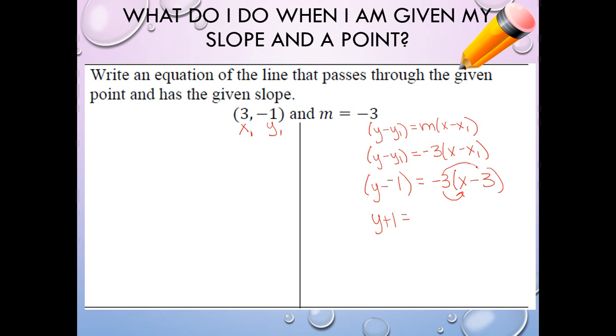Over here, we're going to distribute. I have negative 3 times x, so I have negative 3x. Negative 3 times negative 3, positive 9. I'm still not solved for y, though. I need to get y alone. So I'm going to subtract 1. And I get y equals negative 3x plus 9 minus 1, plus 8.